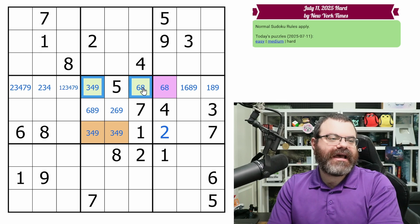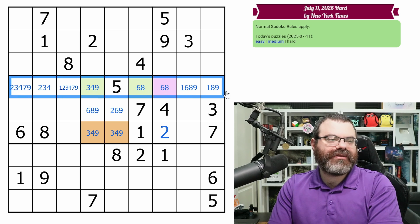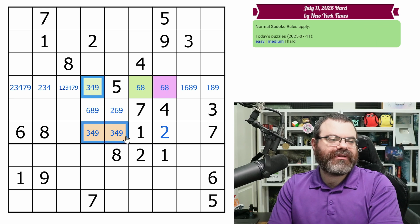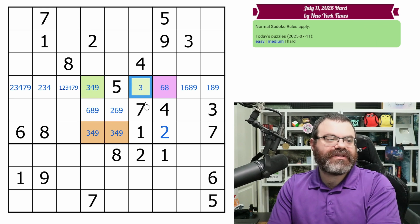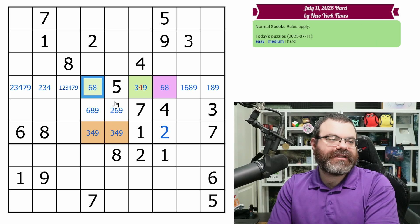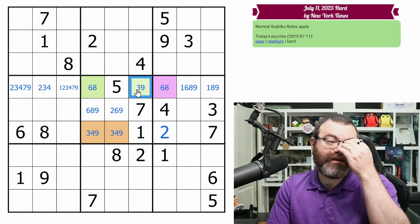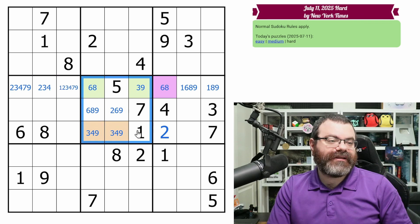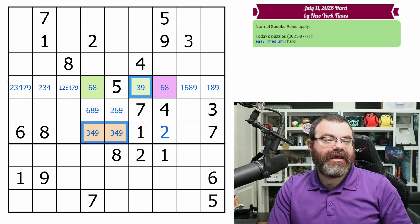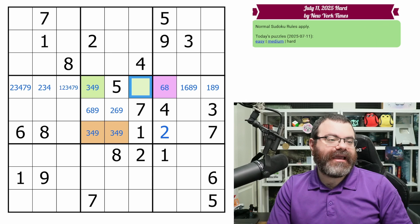And you can see that if that were to happen, we would have a six, eight pair in the row and we would have a three, four, nine triple in the box. And if you swap them, you'd still have the same thing. If this was the three, four, nine, and this was the six, eight, we'd still have a six, eight pair in the row and we'd have a three, four, nine triple in the box. So we can actually use that pair and that triple.